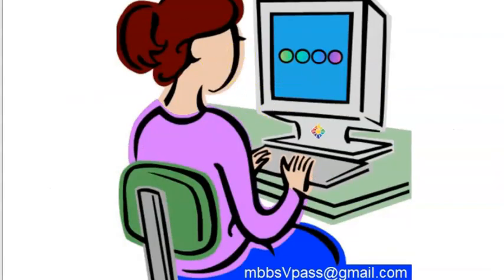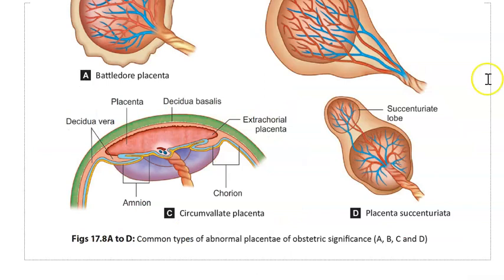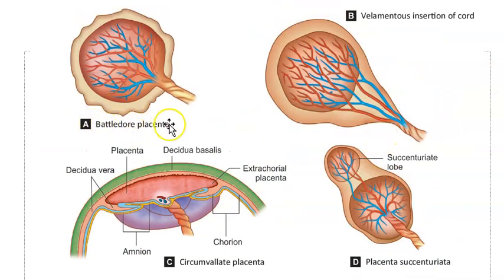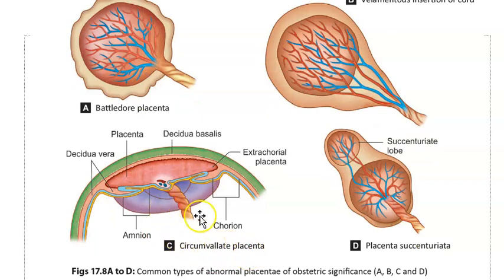There are many types of placental abnormalities. There is battledore placenta, where the umbilical cord is coming from the side. There is velamentous insertion of cord, where the umbilical cord is attached to the membrane and the blood vessels traverse a distance before reaching the placenta.